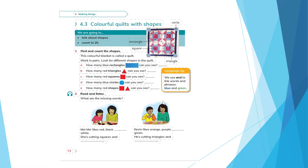Now open your book, page 72. Look here — we have a colorful quilt. It has many shapes. It's a blanket called a quilt. I want you to count how many blue rectangles you can see. 1, 2, 3, 4 — blue rectangles.